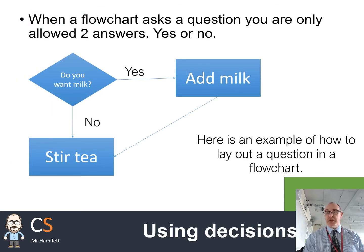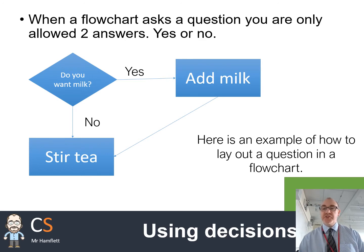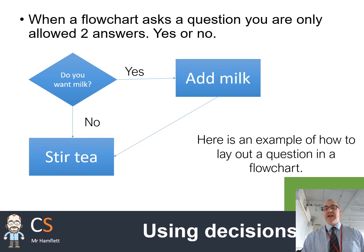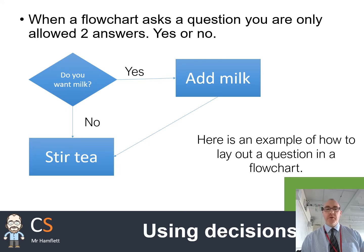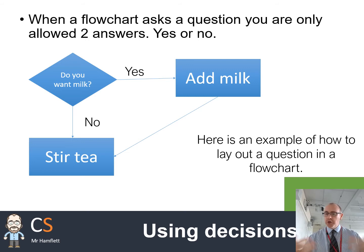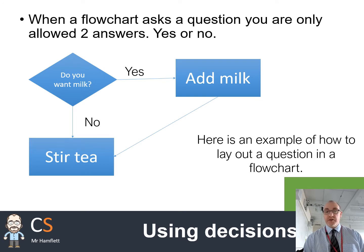When we use decisions in flowcharts, it's important to remember how to lay things out. When we have a question in flowcharts and in computer science in general, we try to phrase it as a yes/no — or more accurately, a true/false answer. So in this example, we're asking 'do you want milk?' We're not asking how much milk you want or what do you want with your tea, which are more open questions. We're asking a very specific yes/no: do you want it? Yes or no. So with a decision box, we'll have a yes/no question and there'll be two options coming out of it — yes and no.